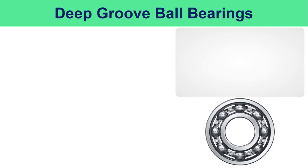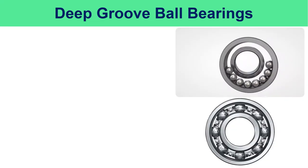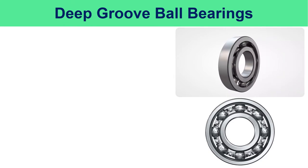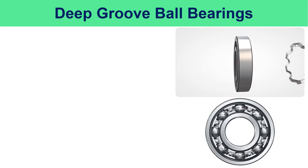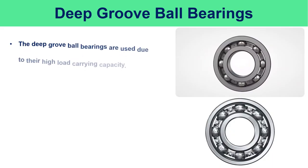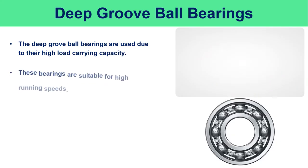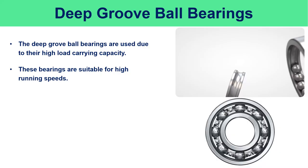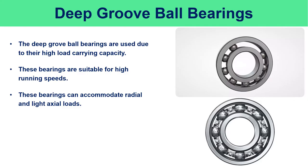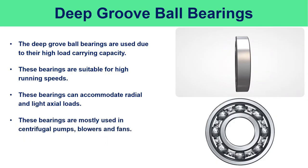Deep groove ball bearings: during assembly, the races are offset and the maximum number of balls are placed between the races. The races are then centered and balls are symmetrically located by a retainer or cage. Deep groove ball bearings are used due to their high load-carrying capacity and are suitable for high running speeds. These bearings can accommodate radial and light axial loads and are mostly used in centrifugal pumps, blowers, and fans.